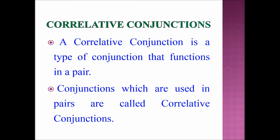Next, we are going to see the third type of conjunction — correlative conjunctions. A correlative conjunction is a type of conjunction that functions in a pair. In other words, conjunctions which are used in pairs are called correlative conjunctions.